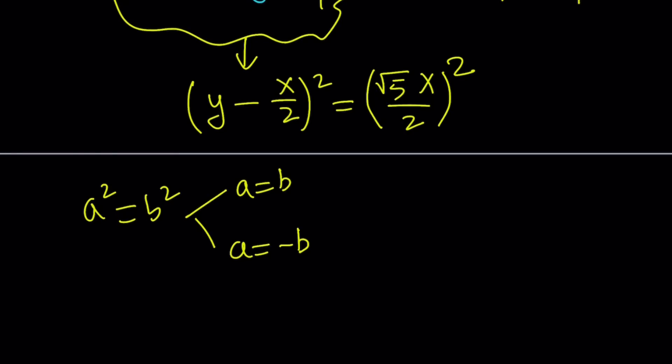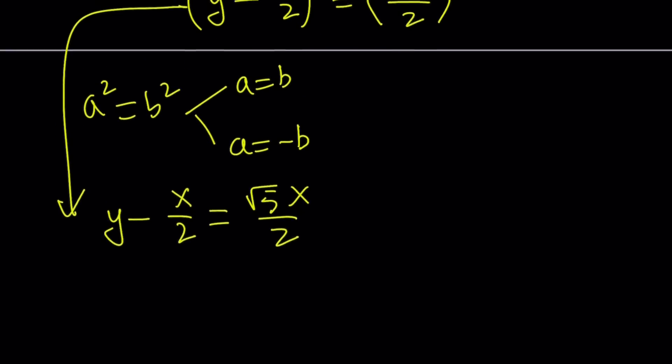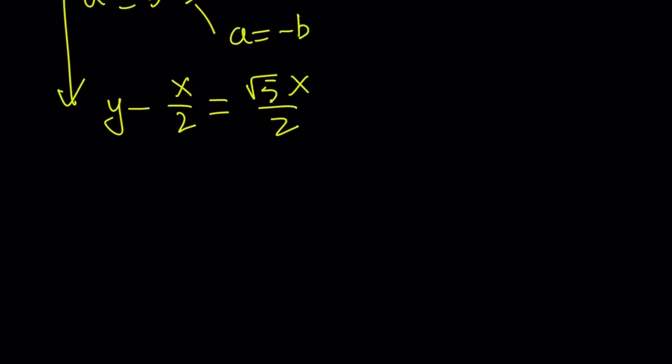So from here we can basically write y minus x over 2 equals root 5 x over 2, which is the first one. And then we can write the opposite of root 5 x over 2. Let's go ahead and work this out first. I want to add x over 2 to both sides. But since these two have the same denominator I can just go ahead and add them: square root of 5 x plus x divide by 2. And then from here y can be written as square root of 5 plus 1 over 2 multiplied by x. So we were able to write one of the solutions, y in terms of x.